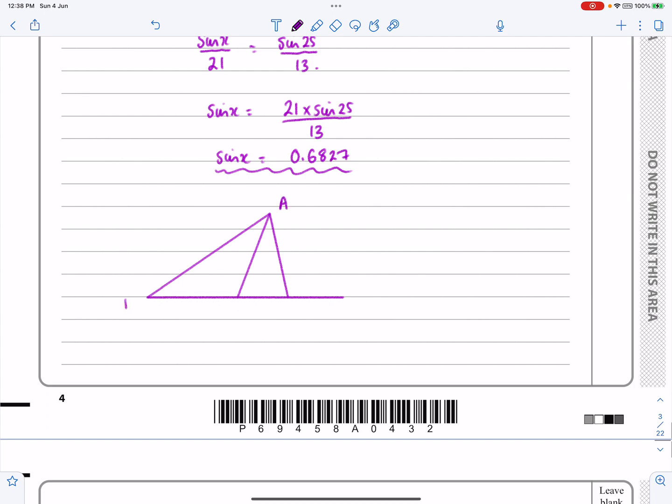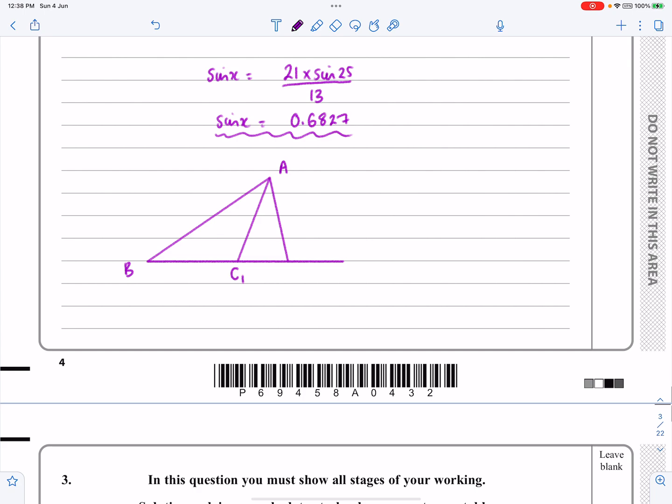Say that we had this situation here, A, B, and then C1 could either be there or C2 could be there, where I know this length X and I've got a possibility of sin X from that situation or sin X from that situation and both of them would have a value Y here and a value Y here as well. So when we're looking at this, there are two possibilities coming from sin X equals 0.6827.